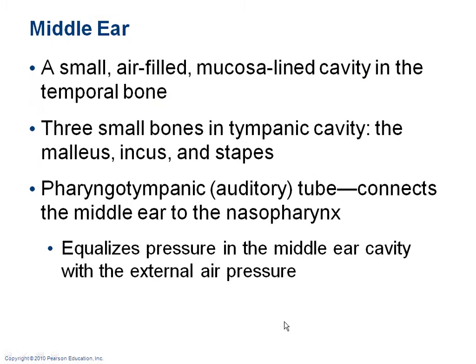The middle ear is a small, air-filled, mucus-lined cavity in the temporal bone. It contains three small bones: the malleus, the incus, and the stapes — sometimes called the hammer, the anvil, and the stirrup. We also have the auditory tube, also known as the pharyngotympanic auditory tube, which connects the middle ear to the nasopharynx.